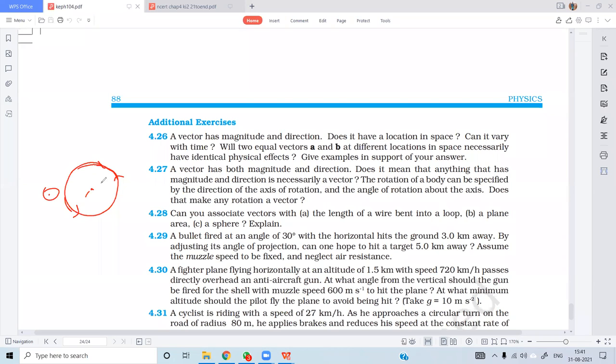The same question is being asked here. You know rotation of a rigid body can be specified by direction of axis of rotation. When we study rotation, we'll understand rigid body. Does it mean that any quantity related to rotation becomes a vector? Angular displacement is also related to rotational motion.